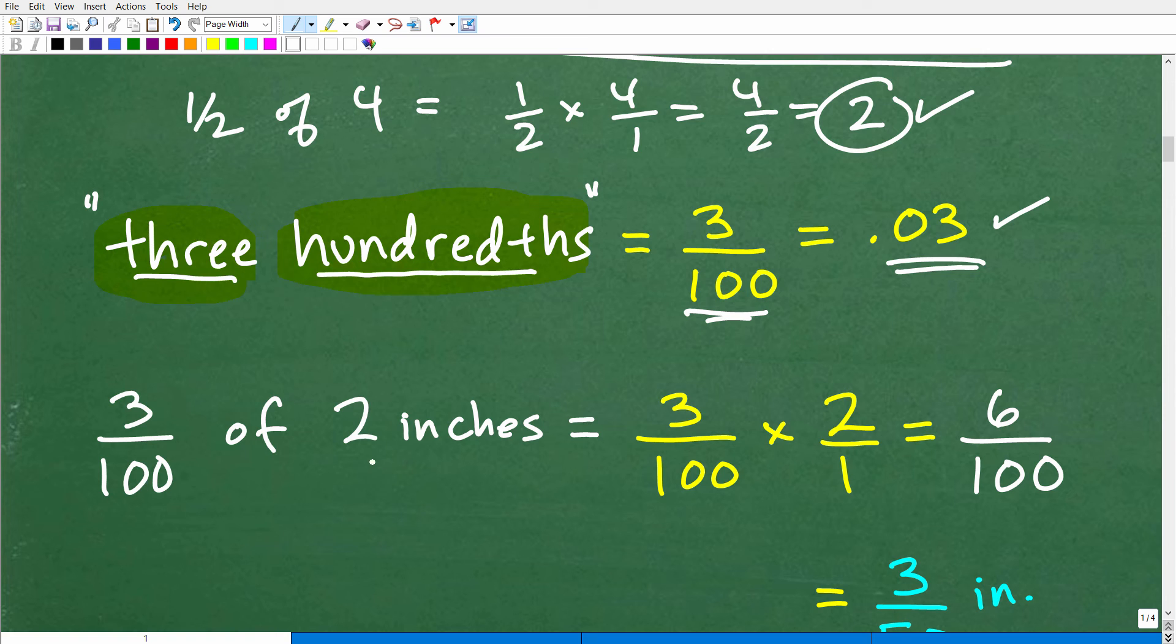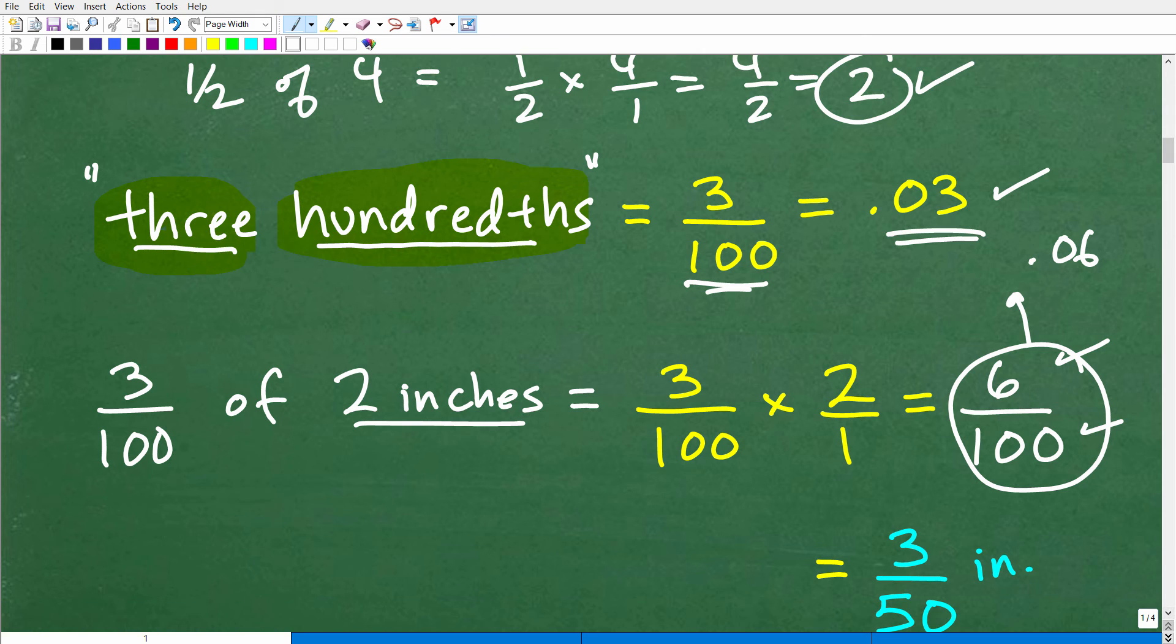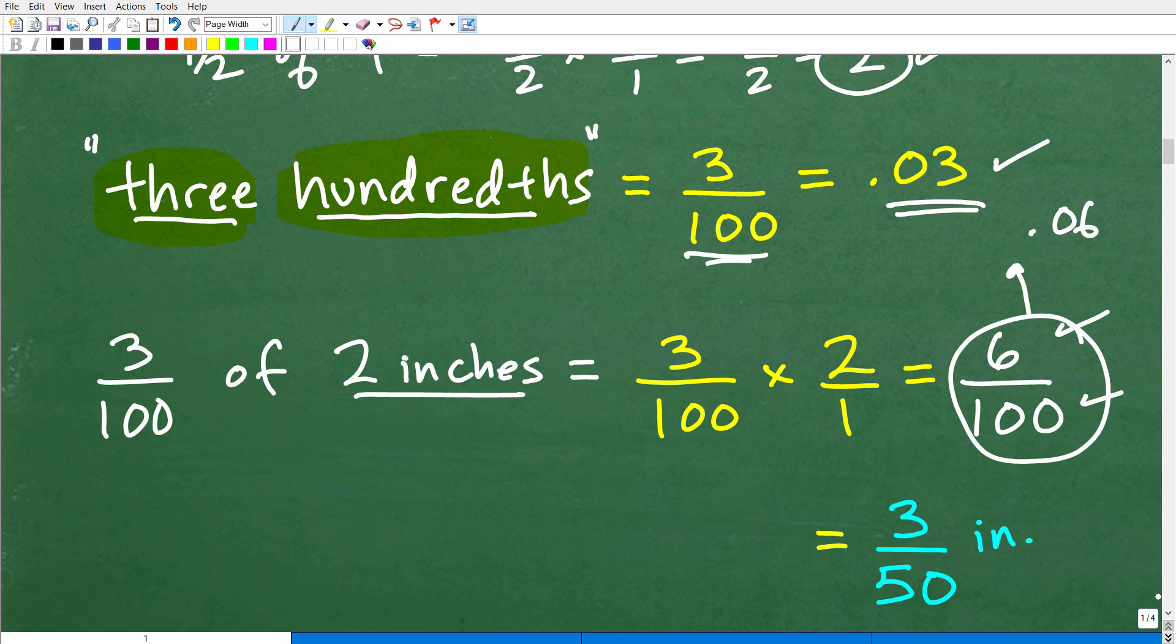I want to know what 3 hundredths is of 2 inches. So I want to take 3 hundredths and multiply it by 2 inches. So 3 over 100, or if you have your calculator, you can use 0.03. So 3 over 100 times 2, or 2 over 1, is going to be 6 over 100, which is the decimal 0.06, or six hundredths. But we could express this as a fraction as well. We could reduce this down to 3 over 50, 3 fiftieths of an inch. So we can just take that down to 1/50, do a little cross-cancelling, and we got 3 over 50.